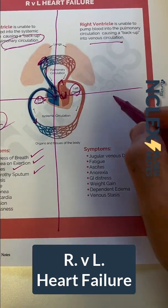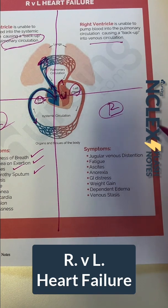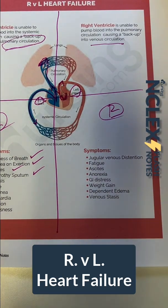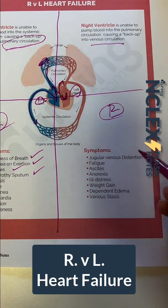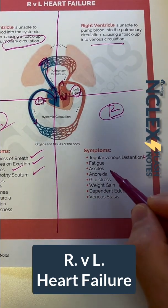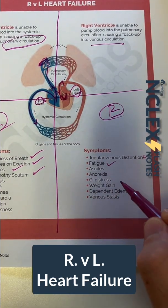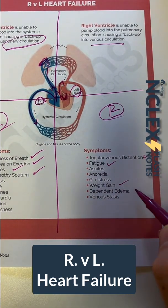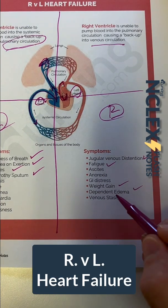On right-sided heart failure, we're going to have a lot of things that have to do with our venous circulation: JVD, fatigue, weight gain, dependent edema, venous stasis.